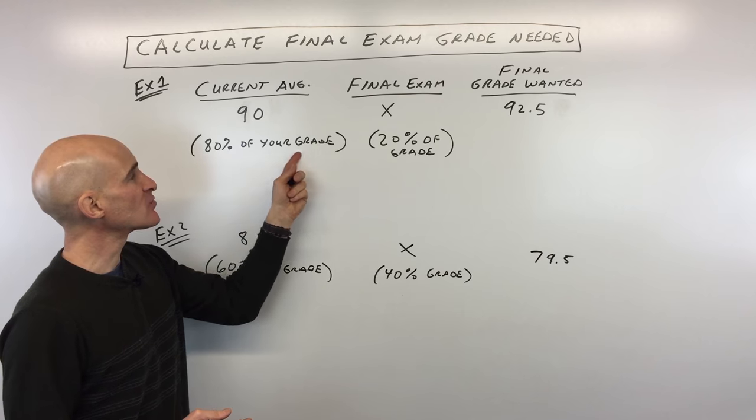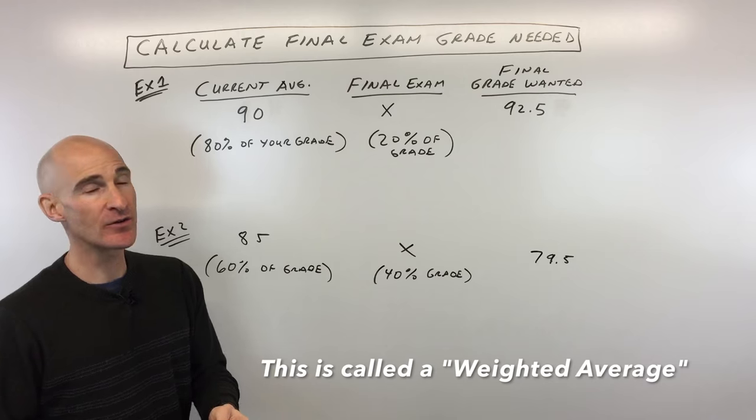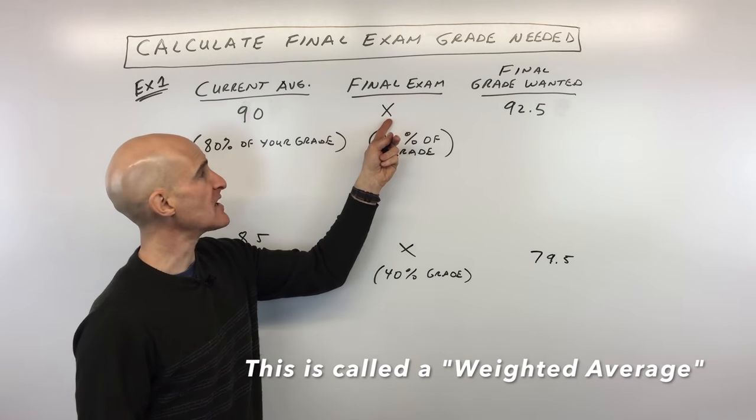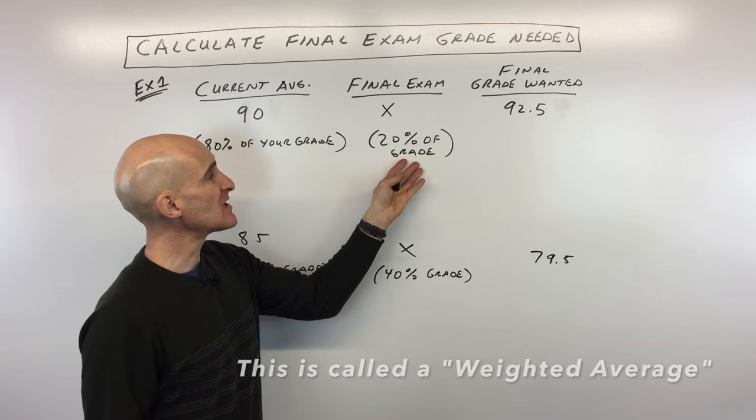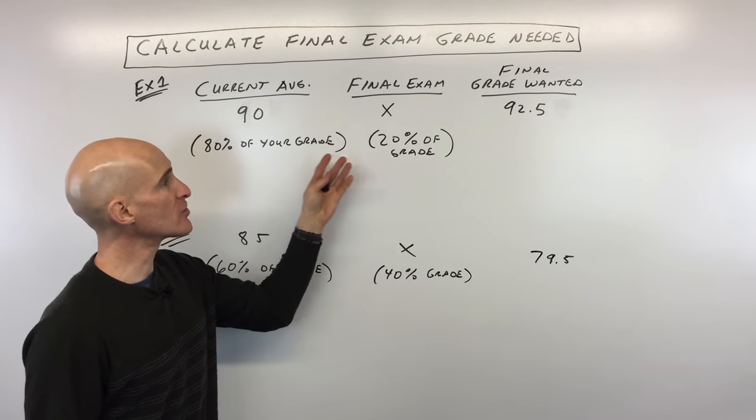Let's say that this represents, according to your teacher, 80% of what your final grade is. And you're wondering what to get on your final exam. So we're going to call this X - it's unknown. Let's say that final is worth 20% of your grade. So 80% over here, 20% over here.